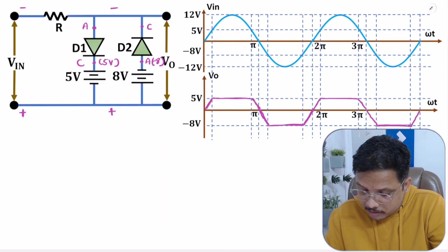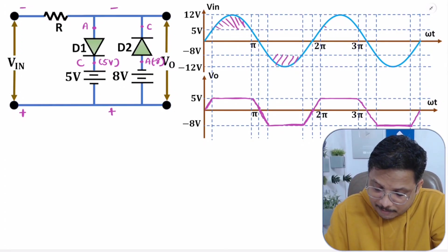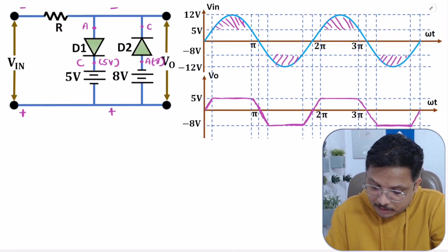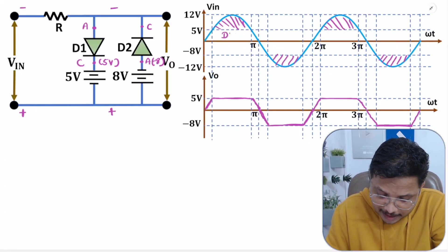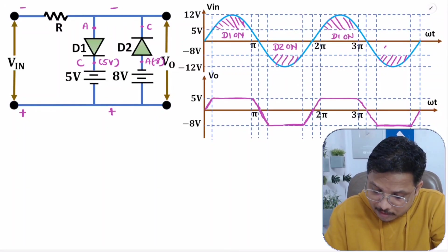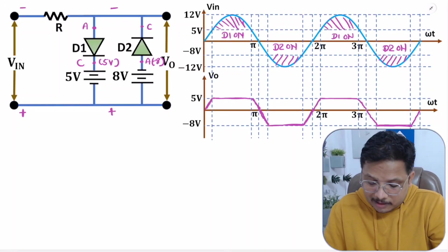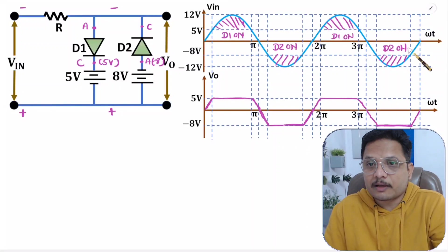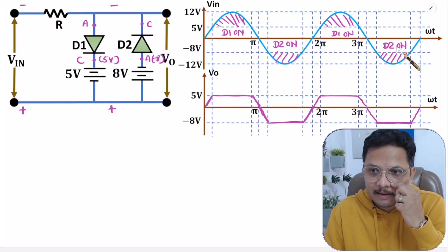So here we are clipping this portion of the waveform using this clipper circuit. During the portion where V_in exceeds 5V, D1 is on; and during the portion where V_in goes below minus 8V, D2 is on. Otherwise, in the middle region, both D1 and D2 are off, and input appears at the output. That is how things are happening and we are clipping the waveforms.